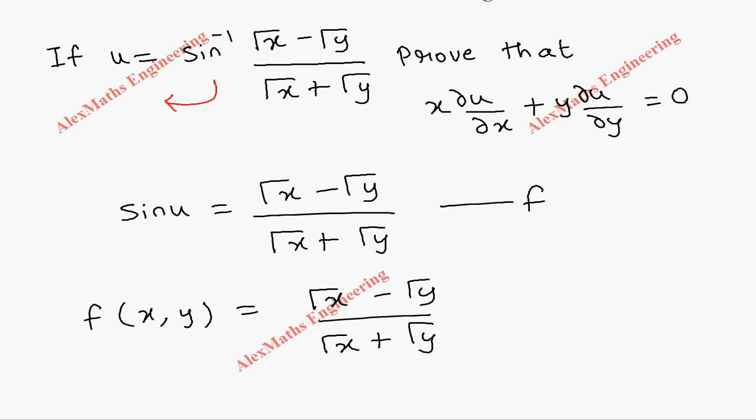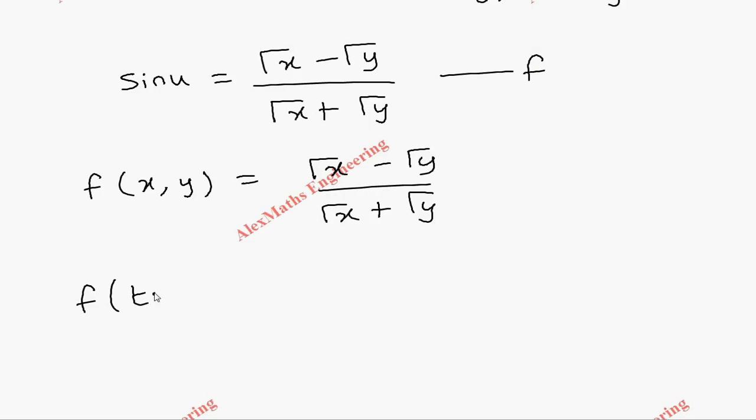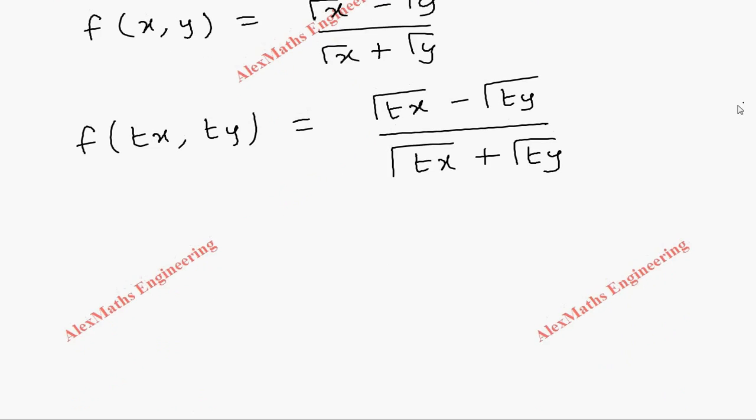For that we have to replace x as tx, y as ty, so this is root tx minus root ty whole divided by root tx plus root ty. Then we will split into root t into root x minus root t into root y. In the same way, denominator root t into root x plus root t into root y.